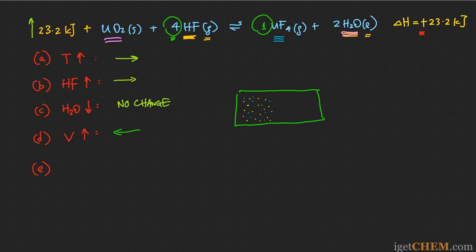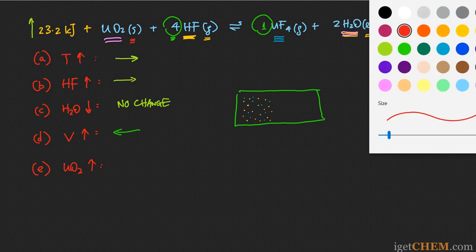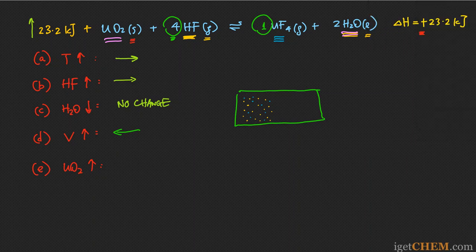Part E: if you add UO₂, the logic is the same as part C where we decreased H₂O. UO₂ is in the solid state, and a pure solid or a pure liquid does not show up in the equilibrium expression. So adding UO₂ would have no effect on the equilibrium position — there is no change.